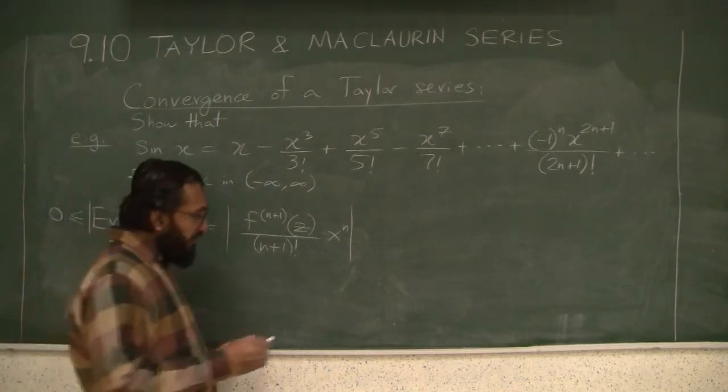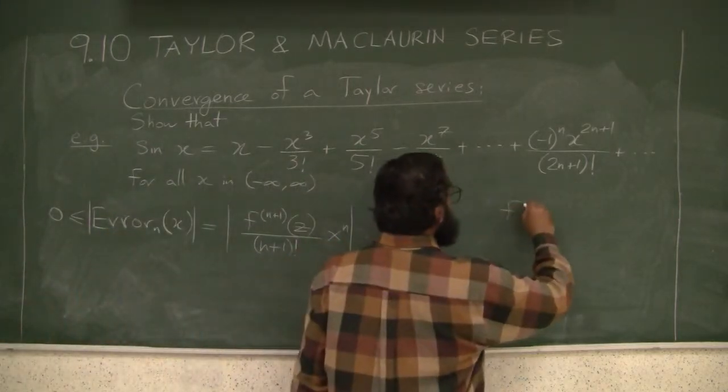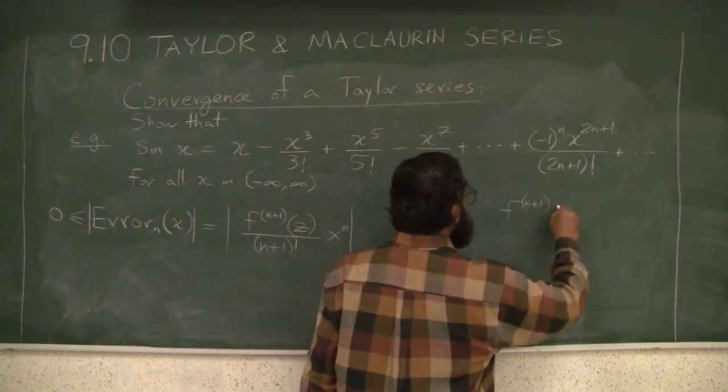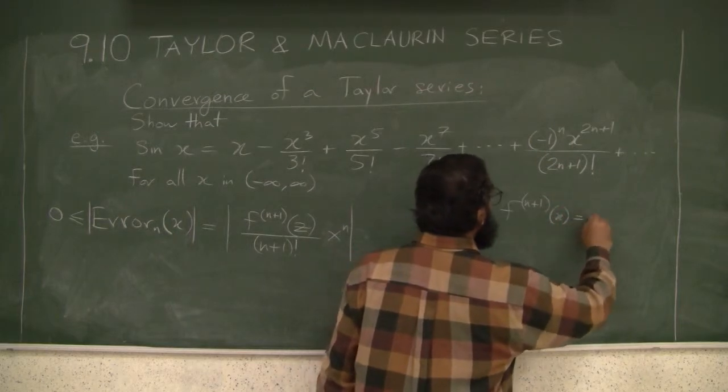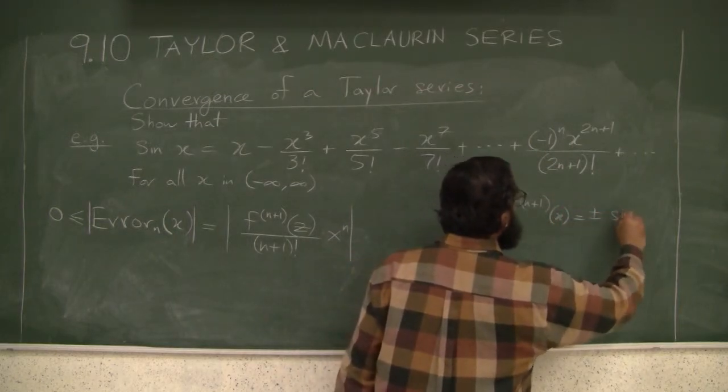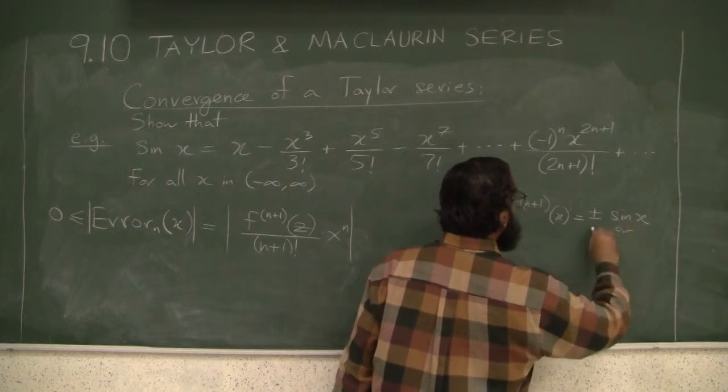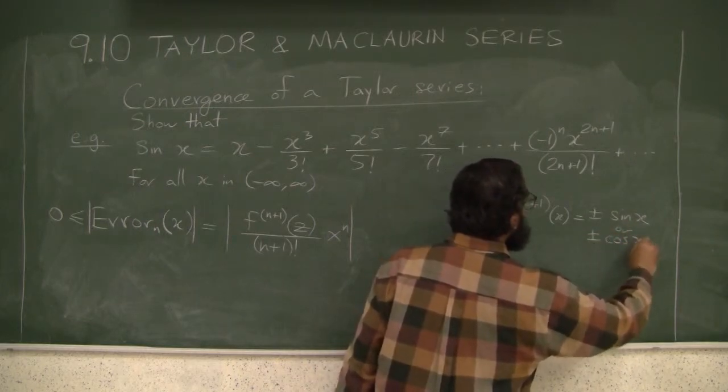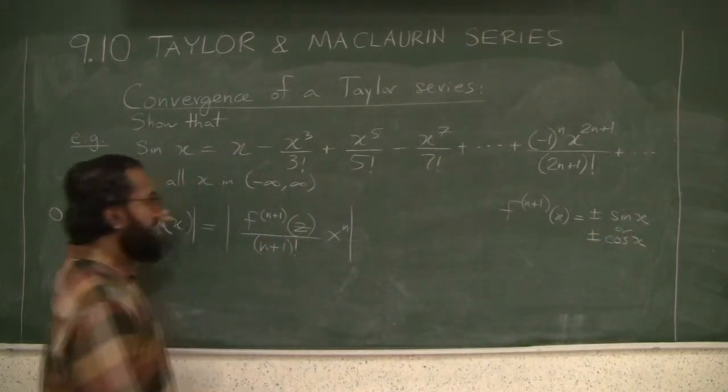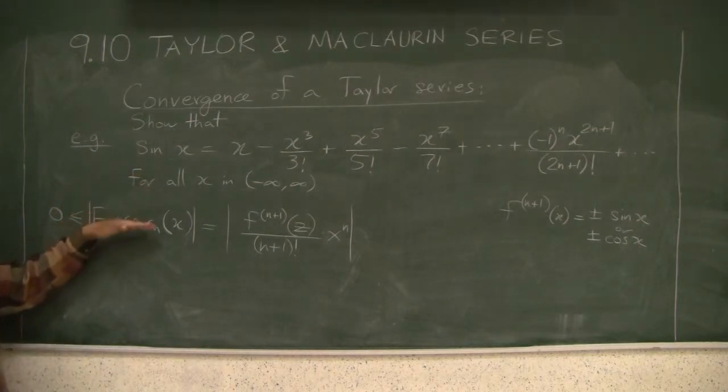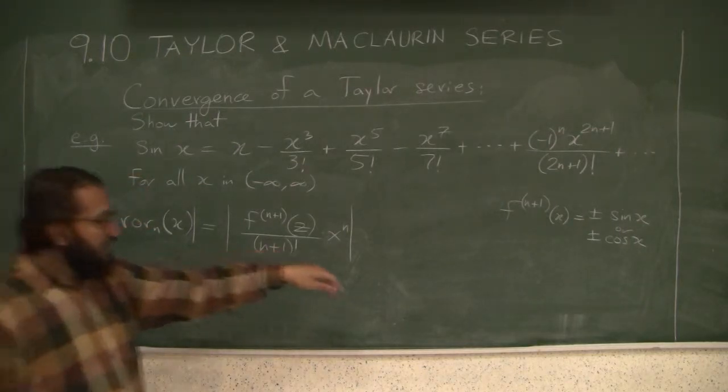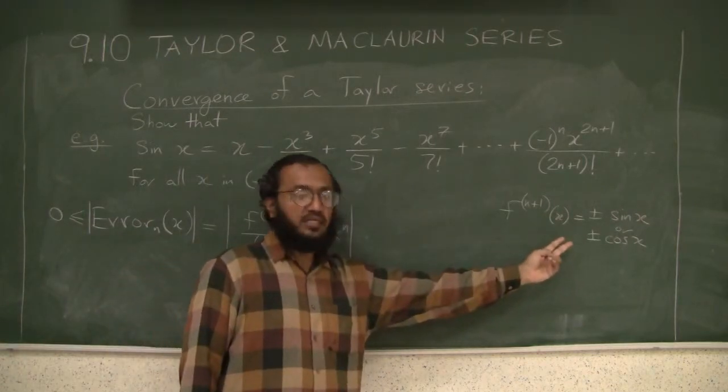But we know that all the derivatives of sine, the (n+1)th derivative of sine of x, are either going to be plus or minus sine x or plus or minus cosine x. We saw the derivatives earlier: sine and cosine and negative sine, negative cosine, finally back to sine. And all of these, no matter what x you plug in, the values will be less than or equal to 1.